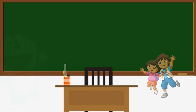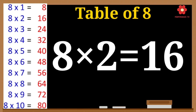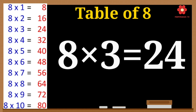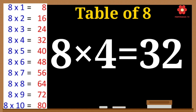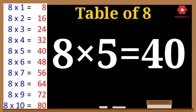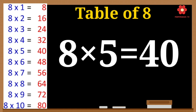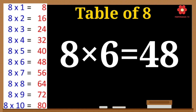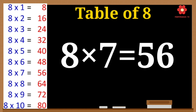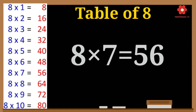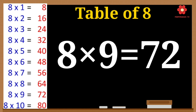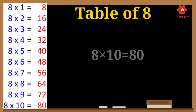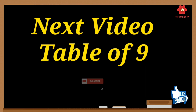8 ones are 8. 8 twos are sixteen. 8 threes are twenty-four. 8 fours are thirty-two. 8 fives are forty. 8 sixes are forty-eight. 8 sevens are fifty-six. 8 eights are sixty-four. 8 nines are seventy-two. 8 tens are eighty. Please subscribe to the channel for more videos and press the bell icon. Thank you.